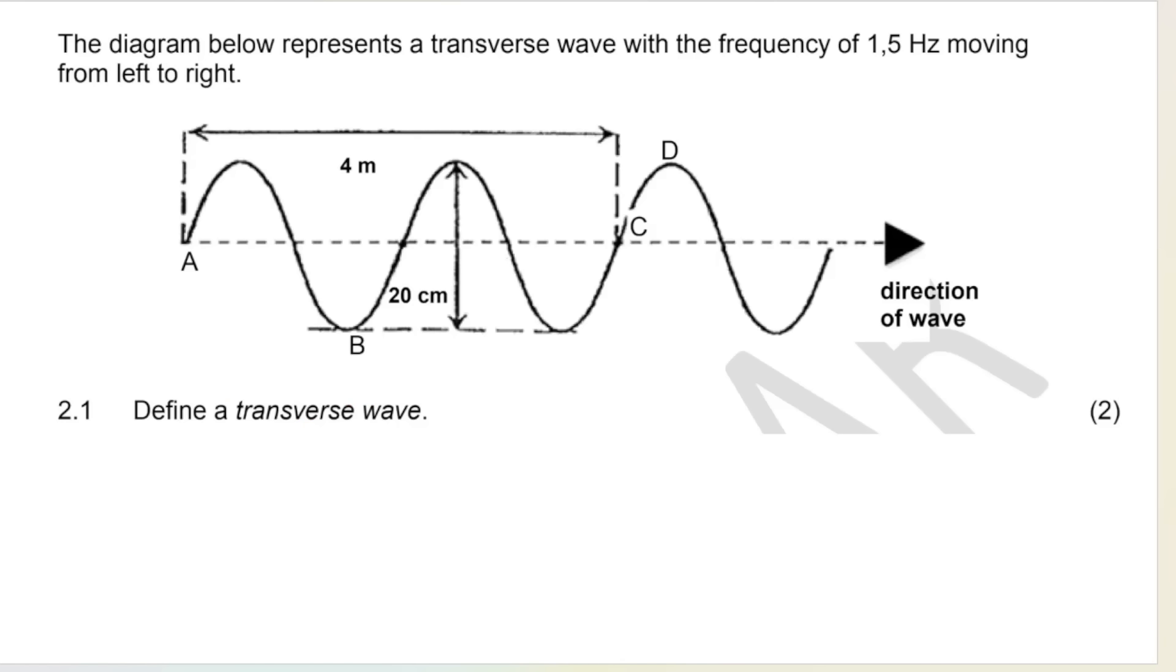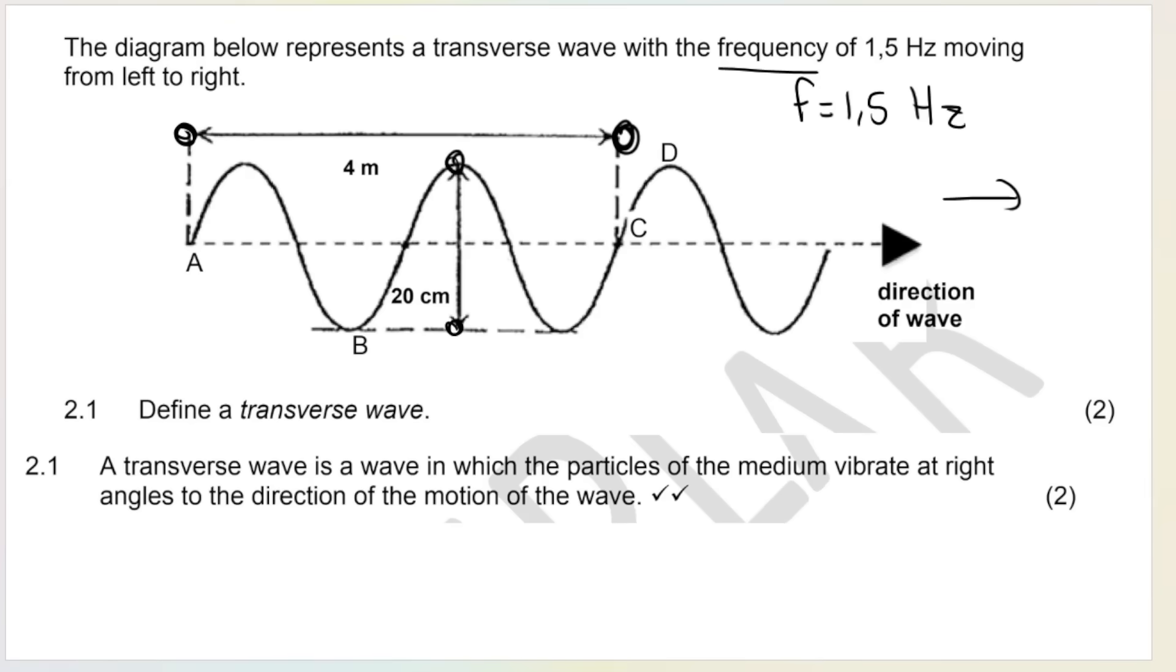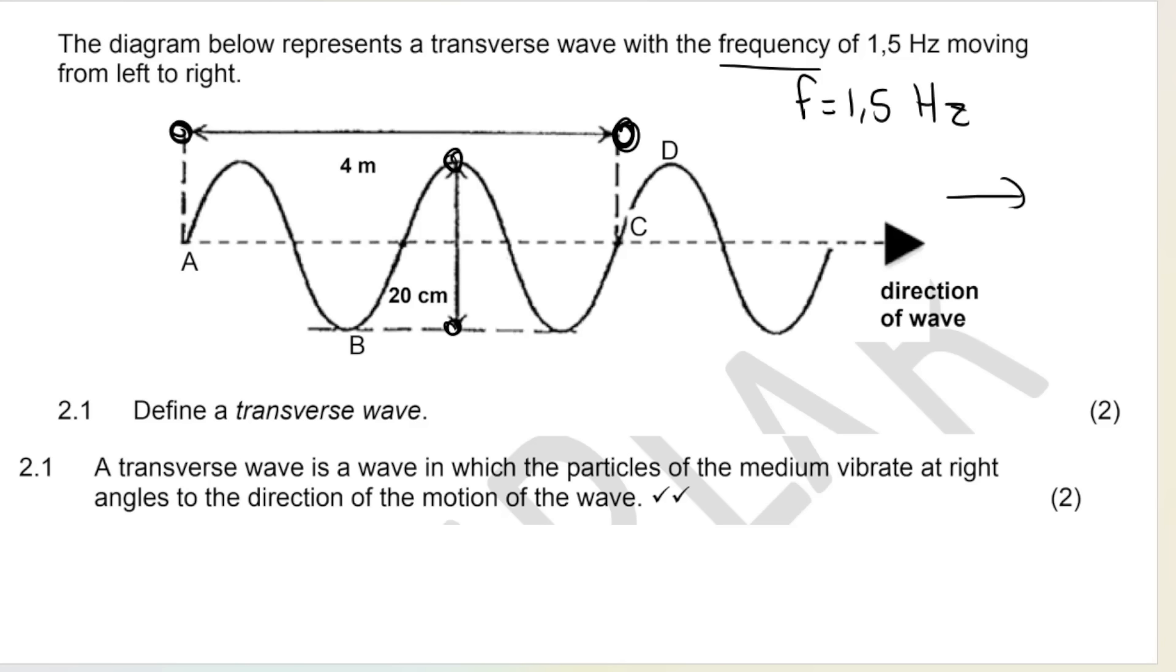Another question. So we've got the diagram below represents a transverse wave. They give me the frequency. That's great. So we know F is 1.5 hertz. They tell me the wave is moving to the right, so it's going that way. They give me this distance here between A and C, and they also give me this vertical distance between here and here is 20 centimeters. Our first question is a definition. Now remember, grade 10 definitions are important. You need to memorize your definitions. You need to get them correct because they're supposed to be the easy questions. So a transverse wave is a wave in which the particles of the medium, so if it's air or water or whatever, those particles vibrate at right angles or 90 degrees to the direction of motion of the wave. So if the wave is going left or right, the particles are going up or down.